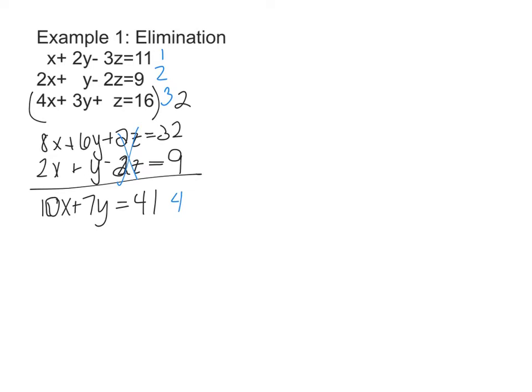Now I'm going to come back to my equations, and I didn't use equation 1 yet, so I need to use equation 1 with equation 2 or 3, but 3 is going to be easier. So now I'm going to multiply equation 3 by 3. So I'm going to get 12x + 9y + 3z = 48.